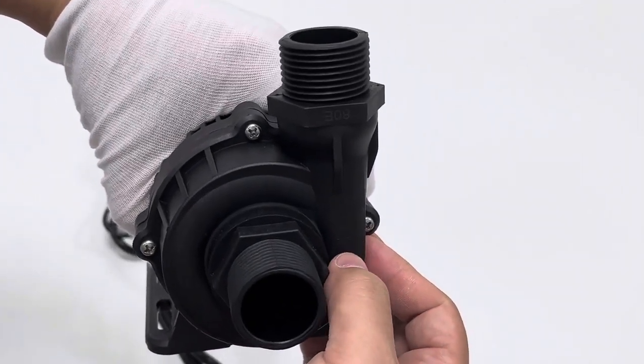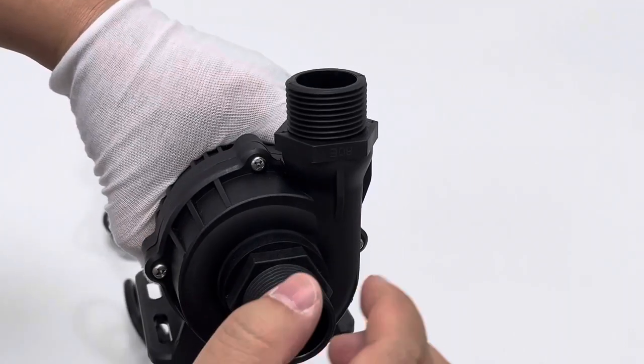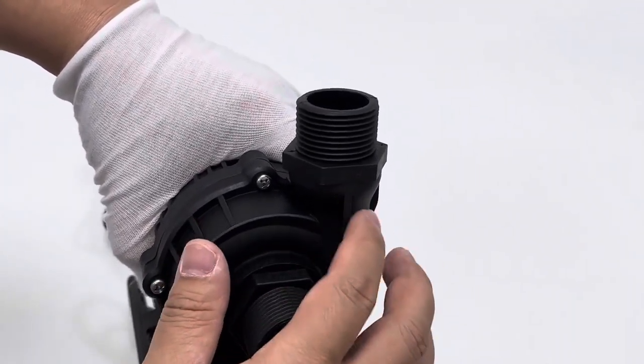Here we can see there exists an arrow mark, showing the direction of water flow when pump works. Here it is DC-80E.